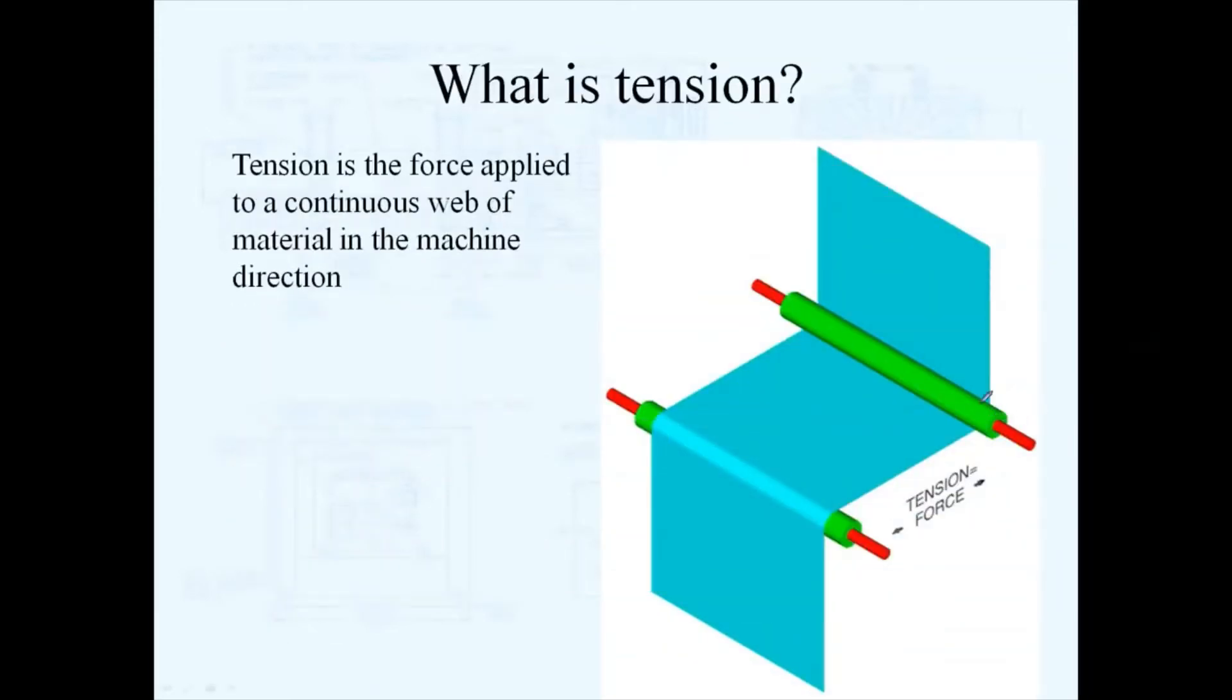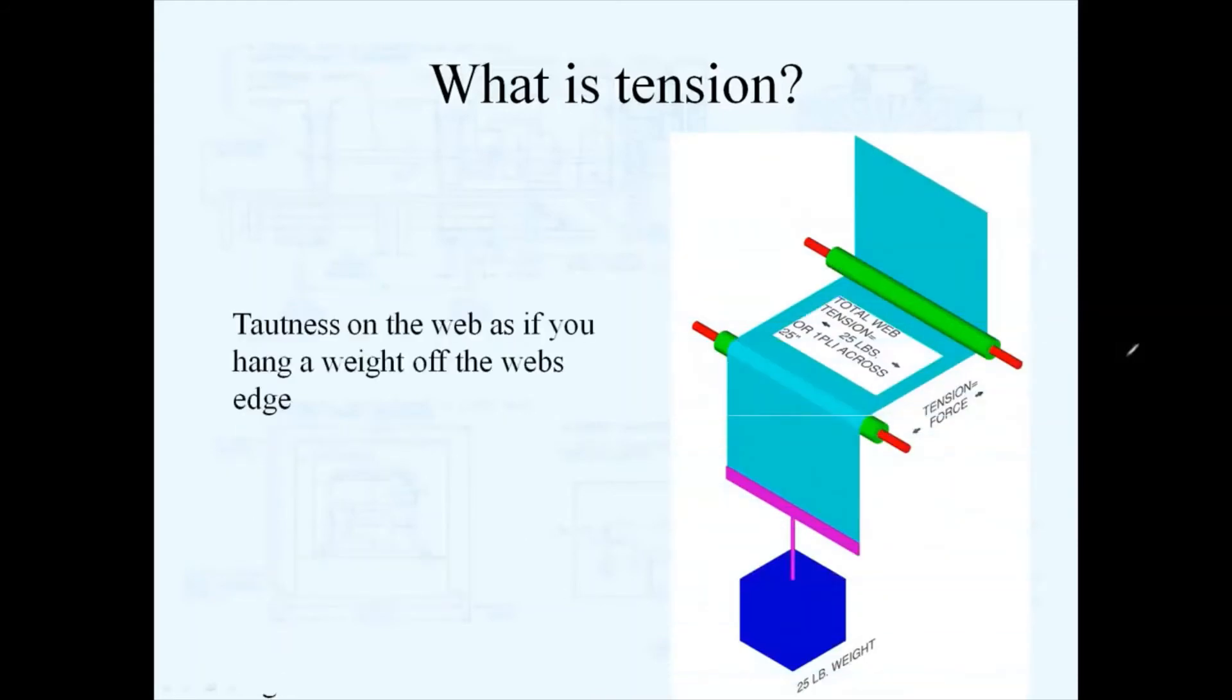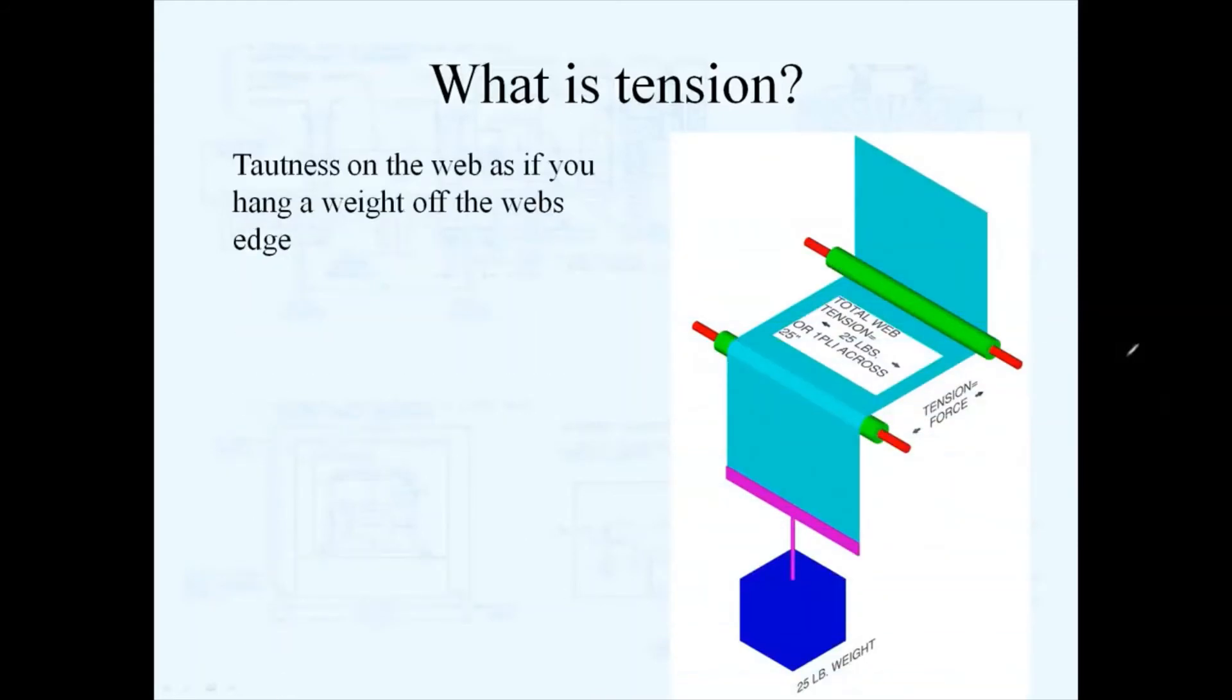Tension is the force that is applied to a web in the machine direction. The force that you apply to your web in this direction is a transient force, and it's referred to as tension. It can be described as the tautness on the web, as if you were to hang a weight off the edge of your web.